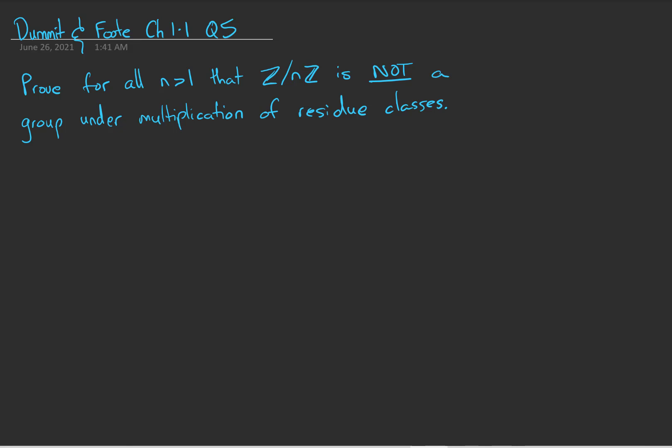Dummit and Foote, Chapter 1.1, Question 5. Prove for all n that the set of residue classes modulo n is not a group under multiplication.